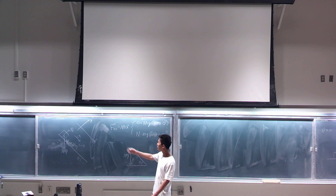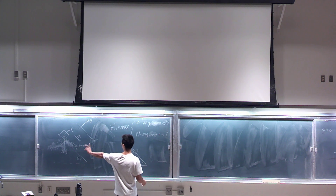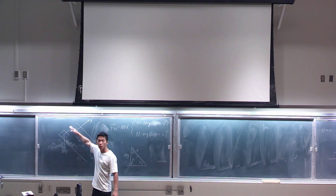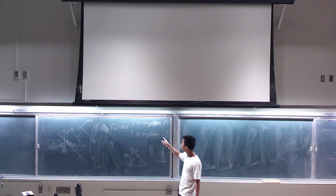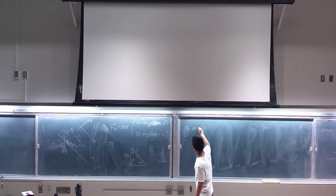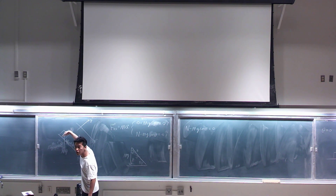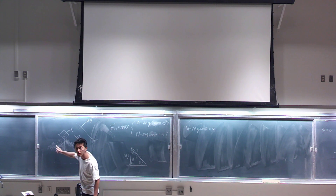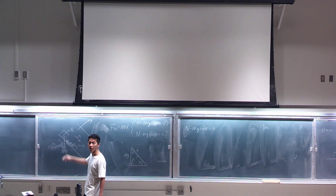If there is no friction on the slope, you just have normal force and gravity. Because the block should not accelerate in the y-direction — it should not fly away from the slope, it should stay on the slope — we know the y-acceleration is zero. So normal force should cancel the component of gravity perpendicular to the slope. Gravity breaks down into a component perpendicular to the slope and one along the slope; the perpendicular component is cancelled by normal force so there is no net force in the y-direction.